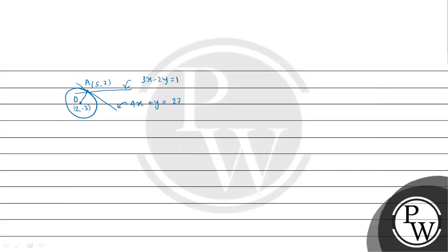The distance OA from the center to the intersection point gives us the radius of the circle. Using the distance formula with center (2, -3) and intersection point (5, 7), the radius works out to the square root of 109.